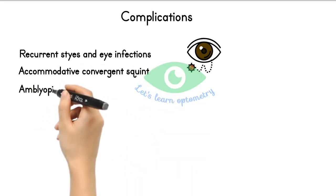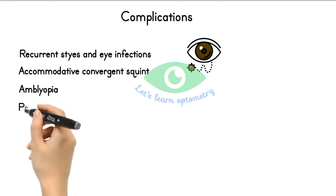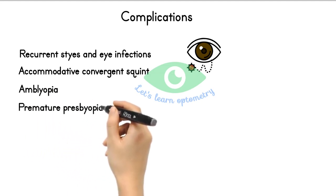Amblyopia is common in high hypermetropia. Premature presbyopia: as age progresses, obvious receding of the near point becomes apparent. It occurs earlier, like before 40 in hyperopes, than emmetropes.